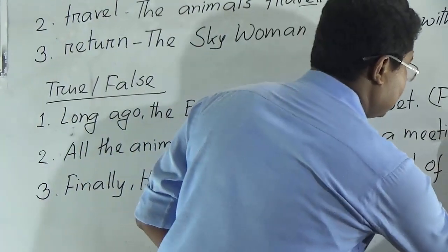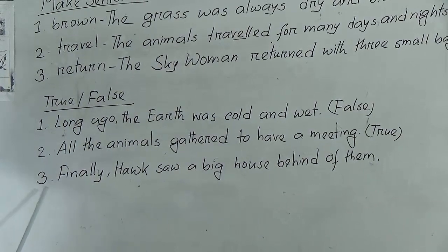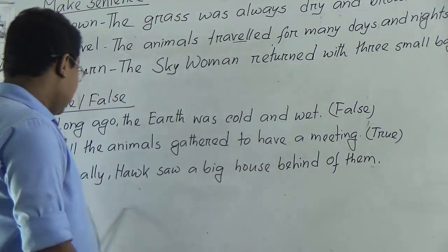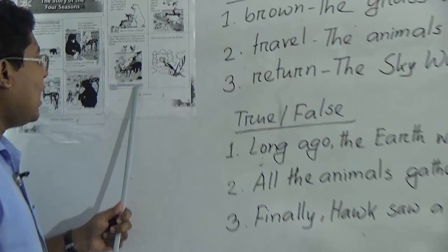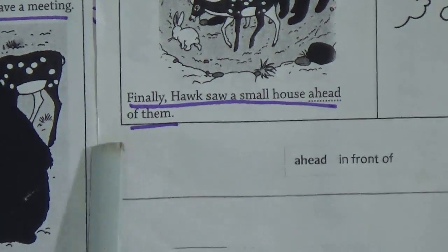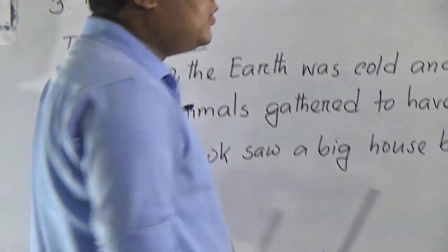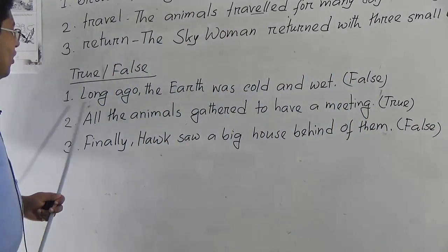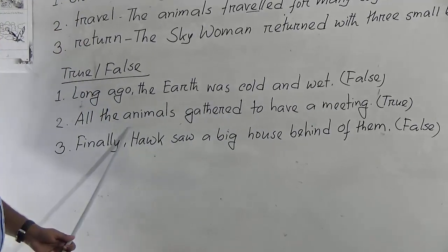Number three, the last one: 'Finally, hawk saw a big house behind of them.' Let's go to the unit. The text says: 'Finally, hawk saw a small house ahead of them.' Our given sentence says a big house behind of them — that is different from the text. So this is also FALSE: 'Finally, hawk saw a big house behind of them' — FALSE.